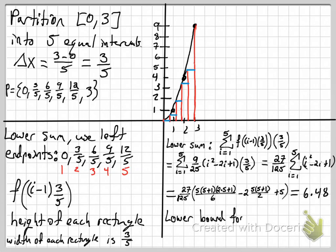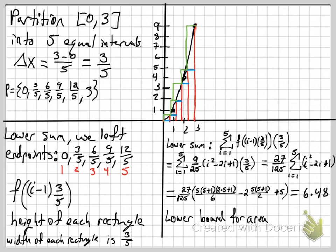Our lower sum is bounded by 6.48 — the area is not going to be lower than that; it's probably higher. Now we define the upper sum. The upper sum uses the right endpoints, which is easier because we don't need i minus 1, we just use i. Drawing in the upper rectangles, they give an over-approximation of the area, so the actual area is between the upper and lower sums.